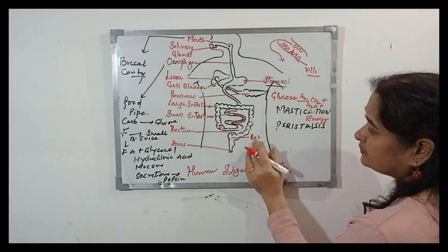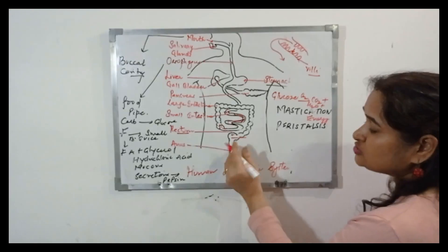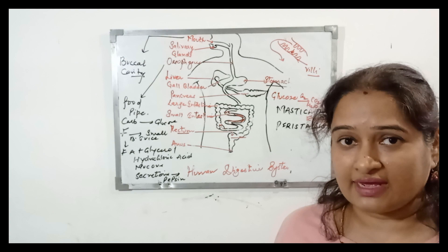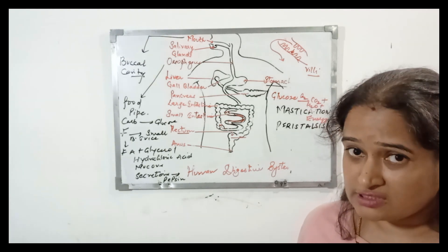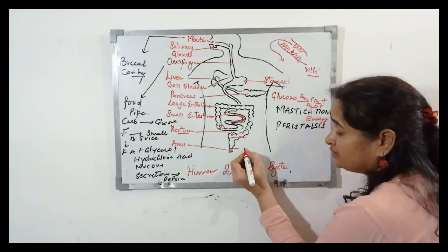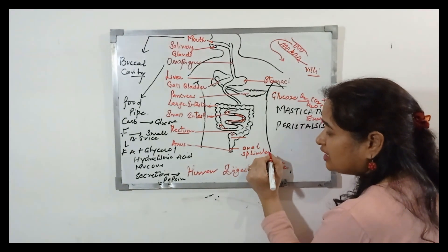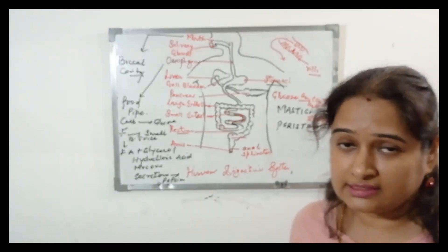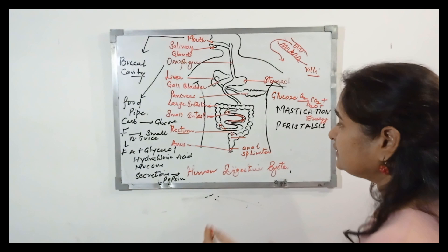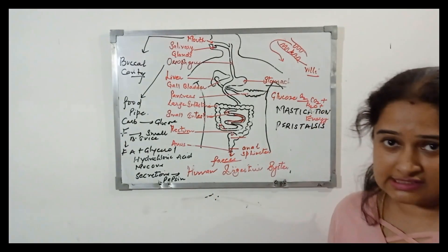The feces are stored in the rectum temporarily. Whenever we go to the toilet, we remove them with the help of an anal sphincter which is present at the mouth of the anus. The anal sphincter guards the opening and closing of the anus, and through the anus this undigested food is thrown out of the body in the form of feces.